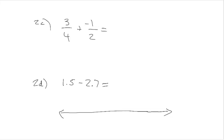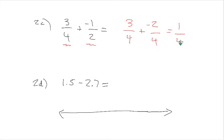Problem 2c is 3 fourths plus negative 1 half. This is an addition problem with fractions, so we have to find common denominators. We look at this as 3 fourths plus negative 2 fourths, because 1 half is the same as 2 fourths. We're adding a negative, which is the same as subtracting: 3 minus 2 equals 1, and the denominator stays the same. We end up with positive 1 fourth.